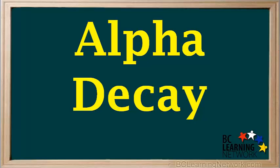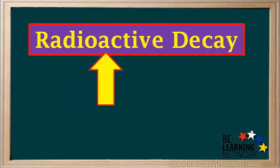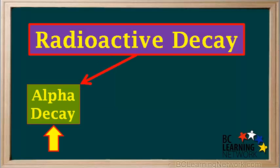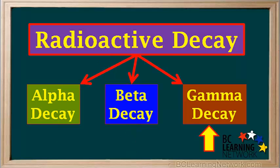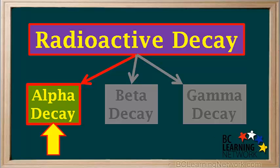This video will help you understand the process of alpha decay. Alpha decay is a type of radioactive decay. Radioactive decay can include alpha decay, beta decay, or gamma decay. This video is about alpha decay.